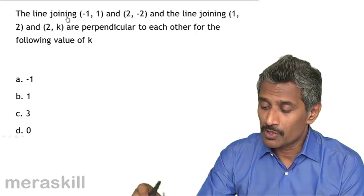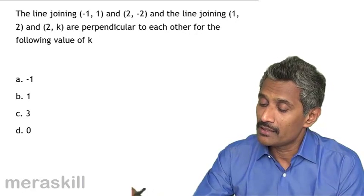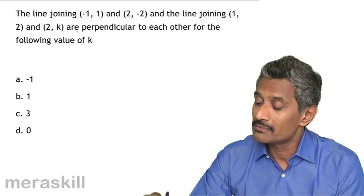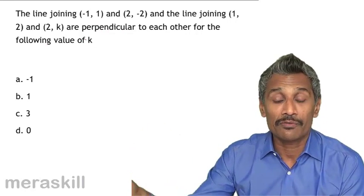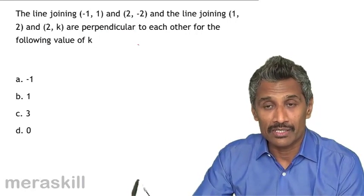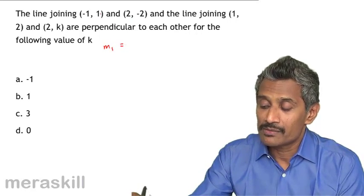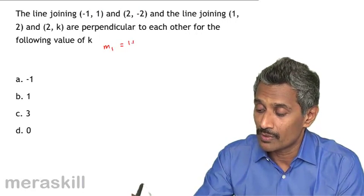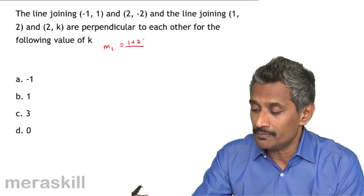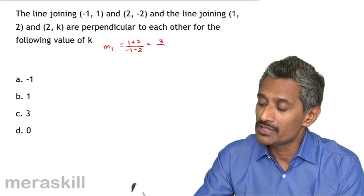Next: the line joining minus 1 comma 1 and 2 comma minus 2, and the line joining 1 comma 2 and 2 comma k, are perpendicular to each other. Find k. The slope m1 of the first line is y1 minus y2 upon x1 minus x2, which is 1 minus minus 2 upon minus 1 minus 2, giving 3 upon minus 3, which equals minus 1.